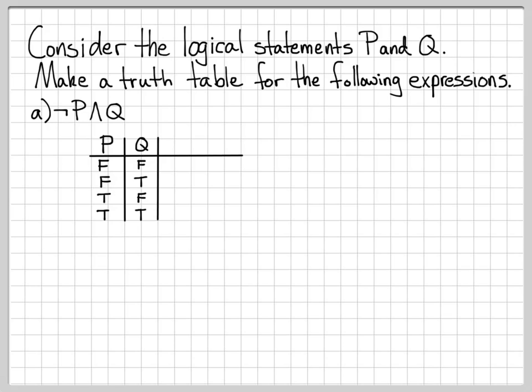So those are the values that P and Q can take on. We want to make a truth table for the overall expression. Now we're going to look at the expression and see what other quantities we need and slowly build up this truth table. The next thing I need when I look at my expression is a column for 'not P'.